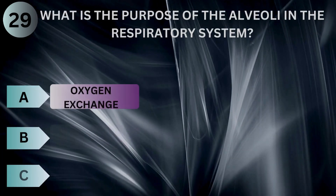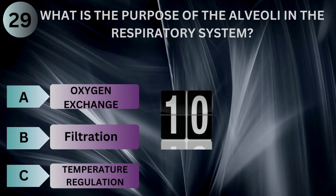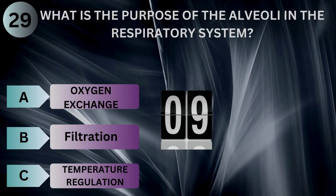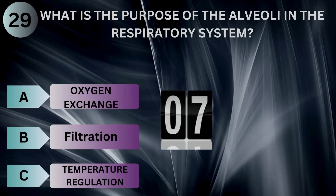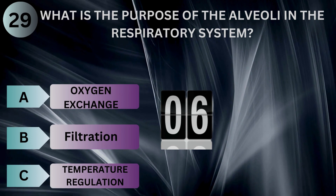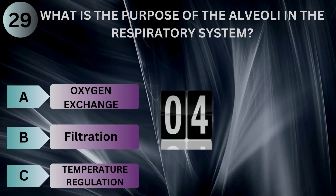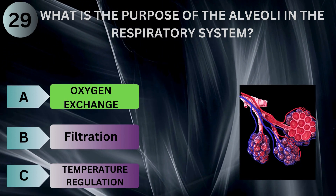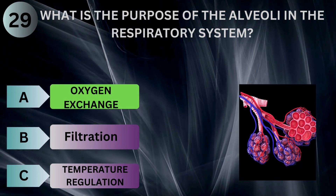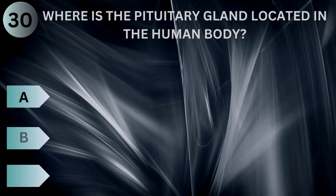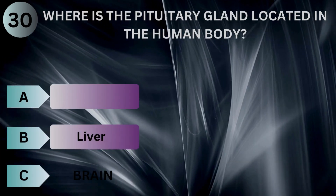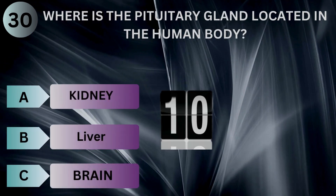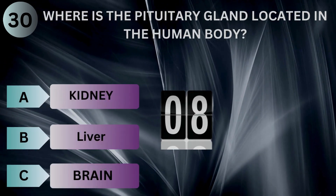What is the purpose of the alveoli in the respiratory system? Where is the pituitary gland located in the human body?